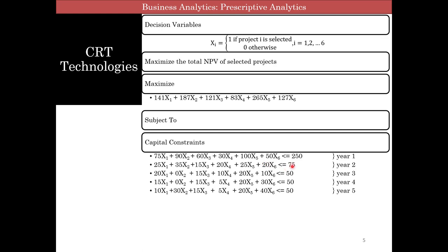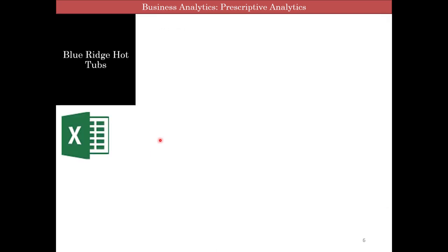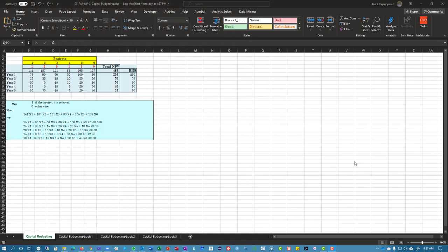Similarly, you've got to take all the costs for year two and less than 75, and then year three, four, and five. And then you've got to say xi is binary, and this is your objective. This is your total model. Once you have your model, we can look at how we're going to set it up in Excel, and how you set up is not going to change except for one small thing, and we'll talk about that.